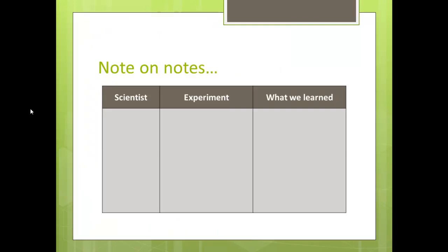Let me tell you a little bit about your notes. Right now, you have your piece of paper in your notebook. I want you to split that into three sections. On the left, you're going to have a smaller section where you'll write the scientist's name. In the middle, a bigger section where you'll talk about the experiment and maybe draw a picture of it. And on the right, a third column where you write what we learned about photosynthesis from that experiment. So for every slide, you're going to have a scientist, an experiment, and what we learned.